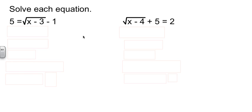So let's solve a few equations here. In our first one, we have 5 equals the square root of x minus 3 minus 1. We need to get that square root isolated. So that means we need to move the 1 over. I'm going to add 1 to both sides so that now my square root is alone.